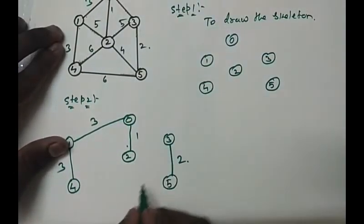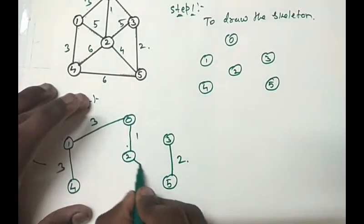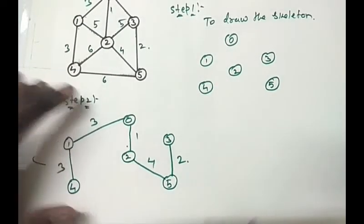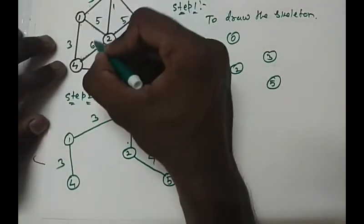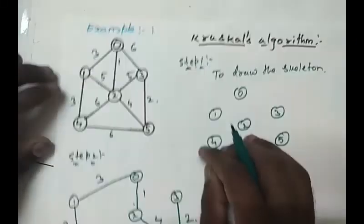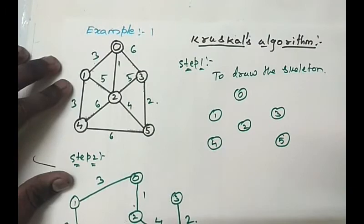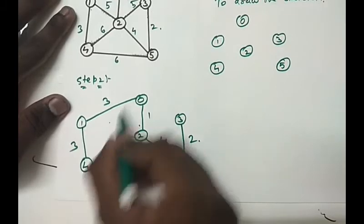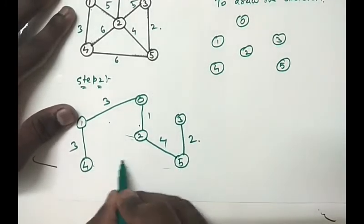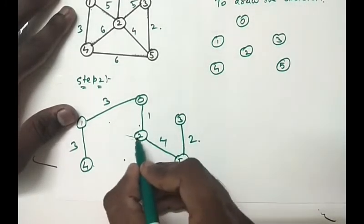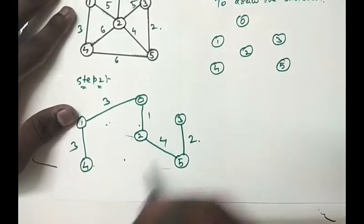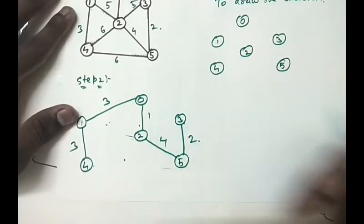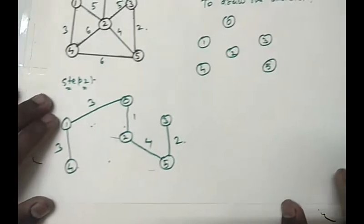So 4 will be here. If we add any other things in this one it will become a circuit. If we add 1 to 2 it will become a circuit and 4 to 5 it will become a circuit. 2 to 4 will also become a circuit and 0 to 3 will also be a circuit.